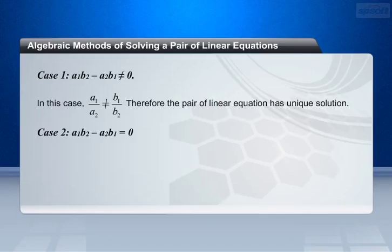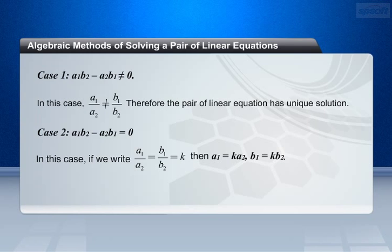Case 2: a1 b2 minus a2 b1 equals 0. In this case, a1 b2 equals a2 b1. If we write a1 by a2 equals b1 by b2 equals k, where k is some constant, then a1 equals k a2 and b1 equals k b2.